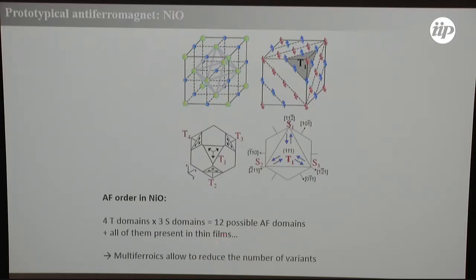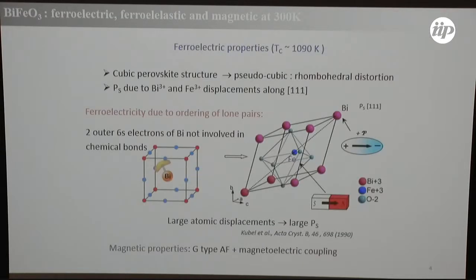If you want to deal with this type of compound you have a huge problem of trying to either isolate one of these 12 domains or to image them individually. One trick to reduce this number is to use a multiferroic material, because in multiferroics we have coupling with another order parameter, which can be used to erase some of these domains. For example, if we use bismuth ferrite, the polarization P is along the [1-1-1] direction, and because of magnetoelectric coupling the L-vector cannot do whatever it wants, reducing the number of variants from 12 to just 3 if you can write a single ferroelectric domain.